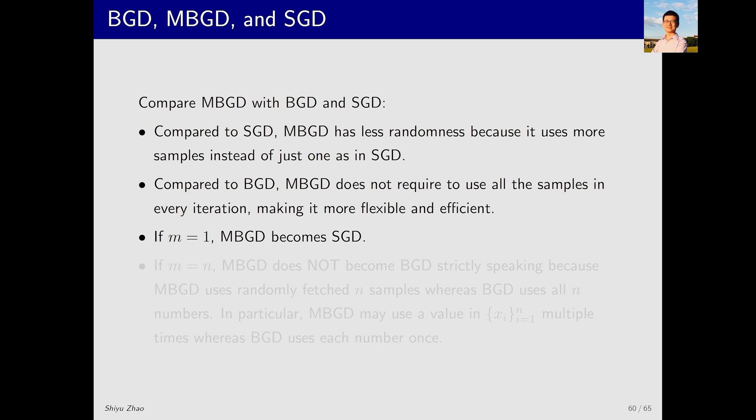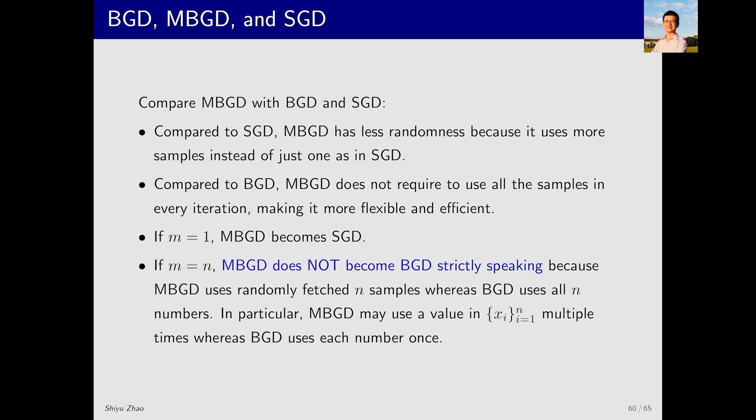As I mentioned earlier, if the mini-batch size of MBGD is simply 1, then it becomes SGD. If the mini-batch size in MBGD is equal to N, there is an interesting point that many people may overlook. What is it? That is, MBGD does not become BGD strictly speaking in this case. Why?